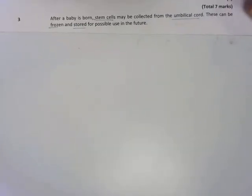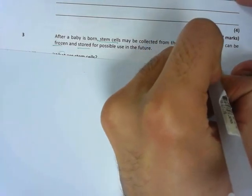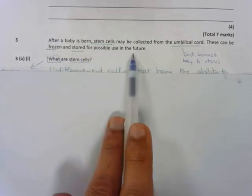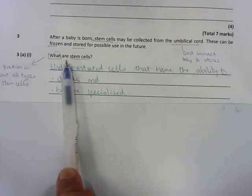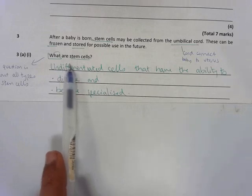Right, question three. This is about stem cells. Now it's saying that after a baby is born, stem cells can be collected from the umbilical cord. Now the umbilical cord is the cord which connects the developing fetus and eventually the baby to the uterus of the mother, and that's how the baby gets its nutrients. These can be frozen. So the stem cells from the umbilical cord can be frozen and stored for use in the future. What are stem cells? So this isn't asking about embryonic stem cells or specifically about adult stem cells or meristem. It's only asking about stem cells in general, so your answer must be general as well.